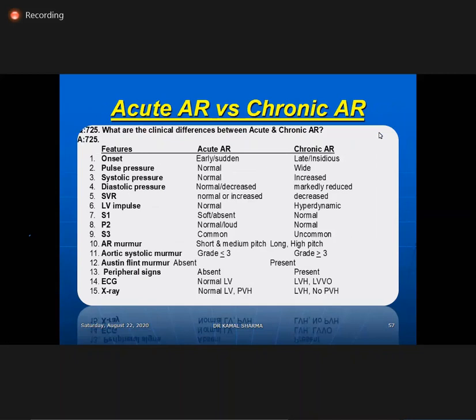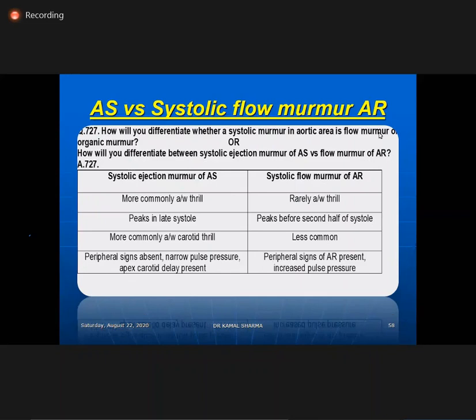Acute AR versus chronic AR: acute AR has sudden onset, normal pulse pressure, normal systolics, and normal diastolics. SVR is different; heart is normal size; impulse is normal; S1 gets soft; P2 may be normal; S3 is common due to acute failure. Murmur is short; there is no Austin Flint murmur; no peripheral signs; X-ray is normal or shows pulmonary congestion. Acute AR manifests only with short murmur, S3, and failure — unlike the classic findings of chronic AR.